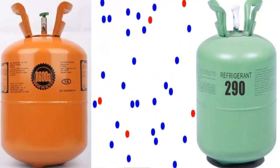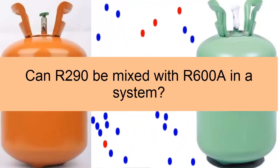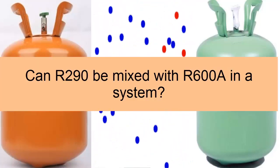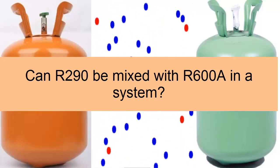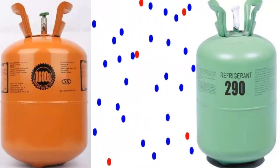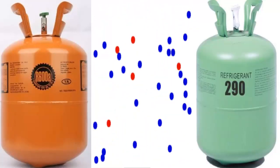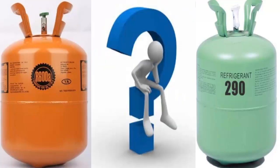Today we present: can the gas R290 be mixed with the refrigerant R600A? Specifically, we are going to study what happens when R600A gas is added to a system that originally uses R290 refrigerant, resulting in a mixture of refrigerants within the system.